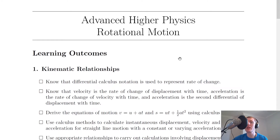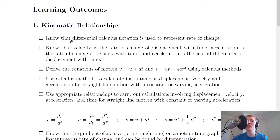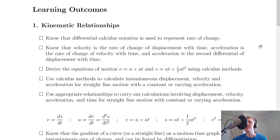The first topic we're going to look at is kinematic relationships. You need to know that differential calculus notation is used to represent rate of change. So when you see things like ds by dt, that means the velocity, which is the rate of change of displacement. And when you see a equals dv by dt, that is the rate of change of velocity, which is acceleration. So that is your differential calculus notation.